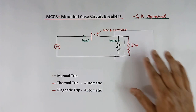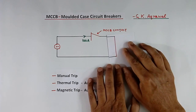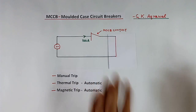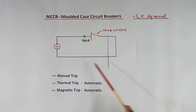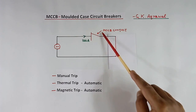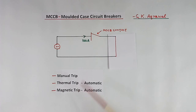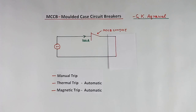The second possibility is that instead of overload, it becomes a short circuit. In this case, very heavy current will flow, and the MCCB magnetic trip unit will trip and this contact will open.